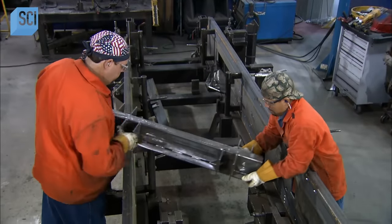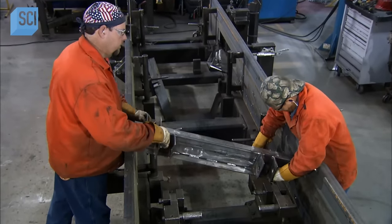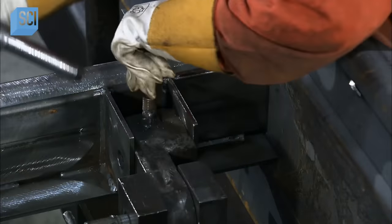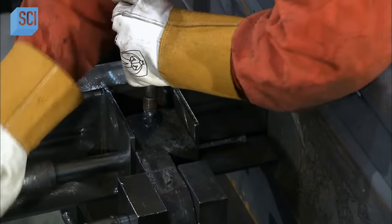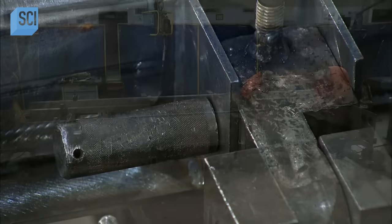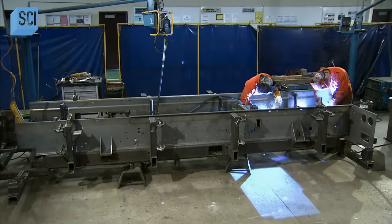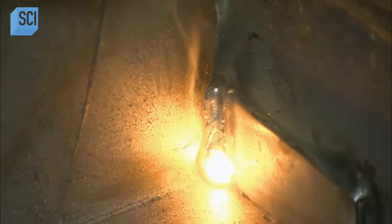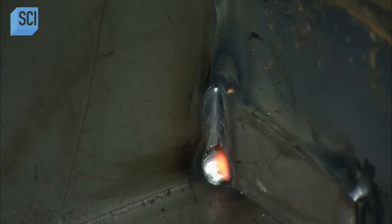Workers install a cross-member just past the midpoint of the frame. It will connect with two sets of lift arms installed in the vehicle. One which raises and lowers the front of the conveyor, the other which raises and lowers the rear. Workers insert alignment pins to position the cross-member on the frame correctly, then weld it in place.